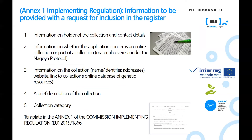Annex 1 of the implementing regulation details the information that should be provided to request inclusion in the register. This includes information on the holder and contact details; information on whether the application concerns a collection or part of a collection; information on the collection including the name, identifier, addresses or website where available, or a link to the collection's online database of genetic resources where available; and a brief description of the collection or the relevant parts thereof. Where any part of a collection is to be included in the register, details on the relevant parts and their distinctive features should be provided. Finally, the application should provide information on the category to which the collection belongs.